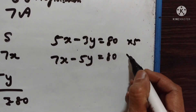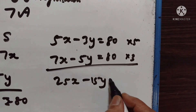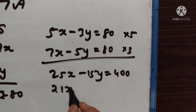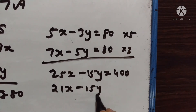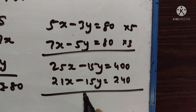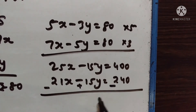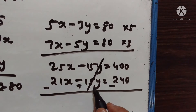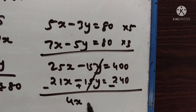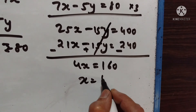Let us multiply the first equation by 5 and the second by 3. So 25x minus 15y is equal to Rs. 400, and 21x minus 15y is equal to Rs. 240. Subtracting the second equation from the first: 15y minus 15y cancels out. 25 minus 21 is 4, so 4x is equal to Rs. 160. Therefore x is equal to Rs. 40.